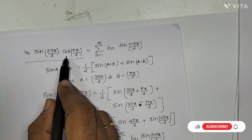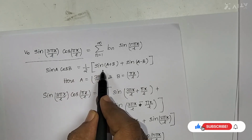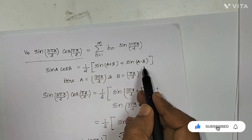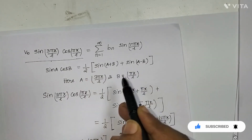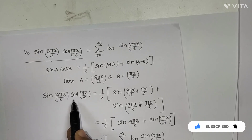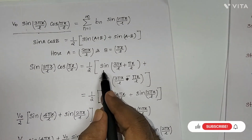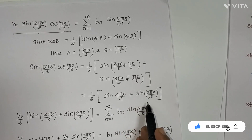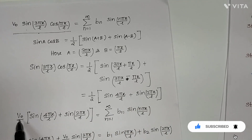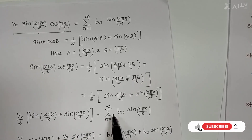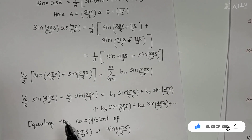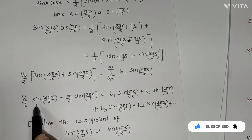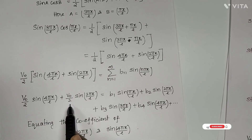On the left-hand side, we have a sin·cos product. Applying sin A cos B = ½[sin(A+B) + sin(A−B)], with A = 3πx/L and B = πx/L, we get: sin(3πx/L)·cos(πx/L) = ½[sin(4πx/L) + sin(2πx/L)]. So the left-hand side becomes: (v0/2)·sin(4πx/L) + (v0/2)·sin(2πx/L).